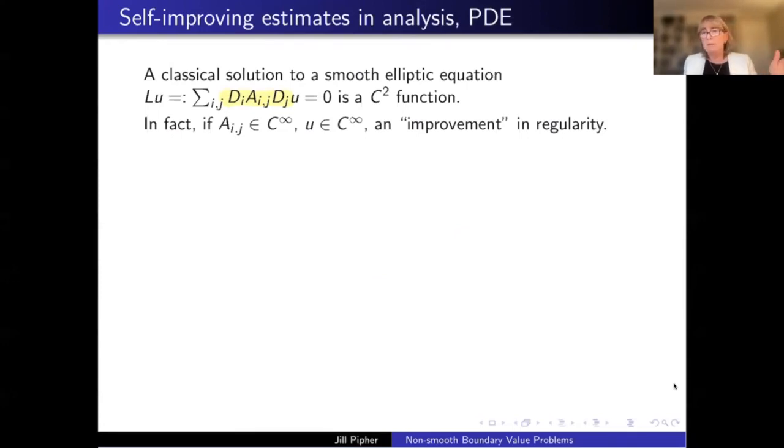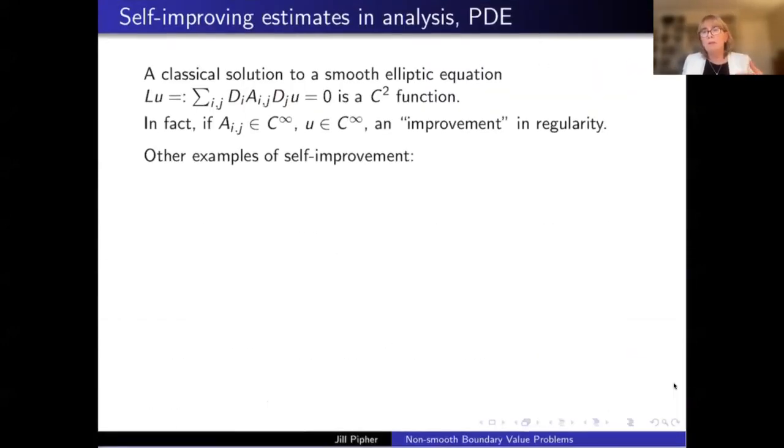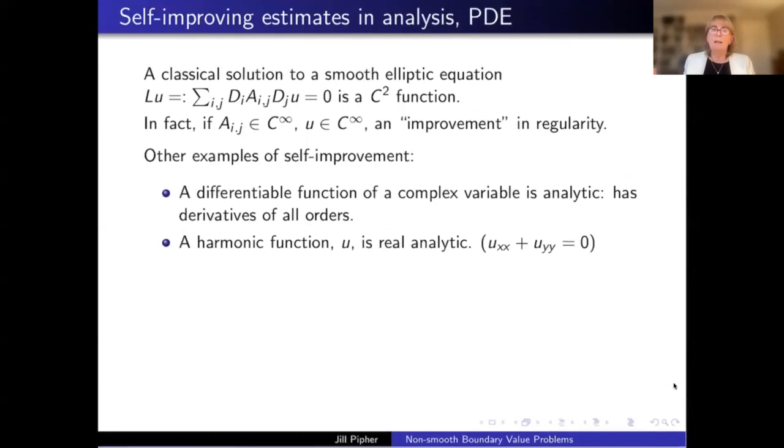But there's an improvement that comes with this assumption that you've got a C2 solution. The improvement is that if the matrix happens to have derivatives of all orders to be smooth, so that's the C infinity part, then the solution not only is C2, you start with C2, you say, I've got a C2 solution. You can actually improve, show that it has this improvement in regularity. It too has derivatives of all orders. So this notion of sort of self-improving, you know, from one property, you use something about the equation to get an increase in regularity is something you've seen before in the context of complex variables. A differentiable function of a complex variable actually has derivatives of all orders.